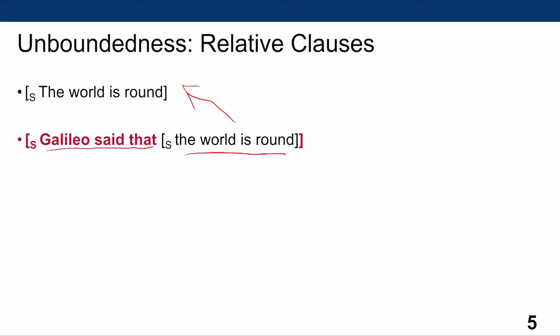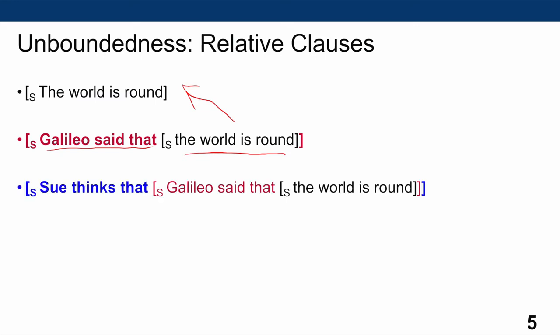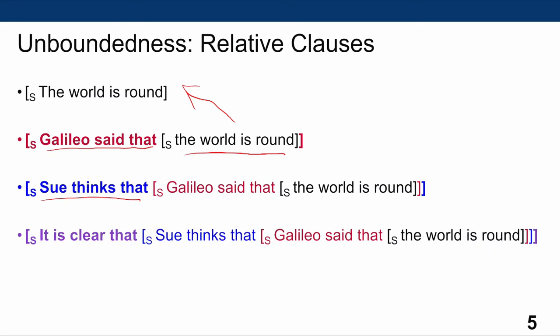I can take the whole sentence 'Galileo said that the world is round' and again use it as a relative clause in a larger clause, getting 'Sue thinks that Galileo said that the world is round.' And I can do the same thing again: 'It is clear that Sue thinks that Galileo said that the world is round.' The complementizer 'that' in English allows me to insert another sentence into a sentence I'm building, thereby allowing this property of unboundedness.